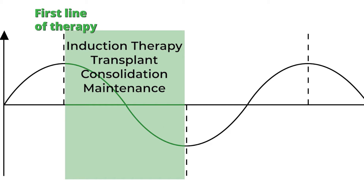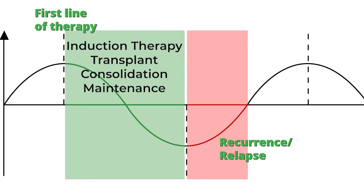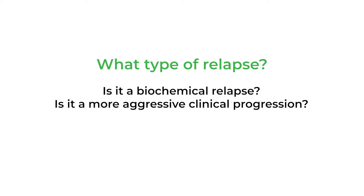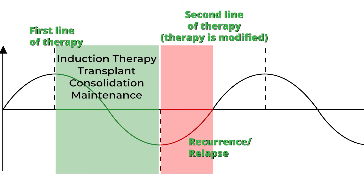When we're thinking about the next line of therapy, it's basically when the first relapse occurs, and at that time therapy is modified — looking at variables such as whether it's a biochemical progression or a more aggressive clinical progression. Anytime a change of therapy is happening in that moment, that's considered second-line therapy.